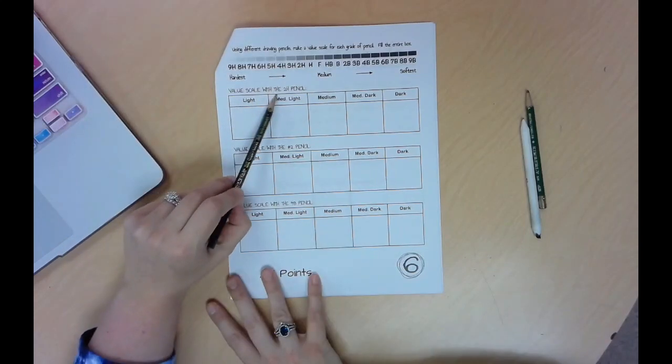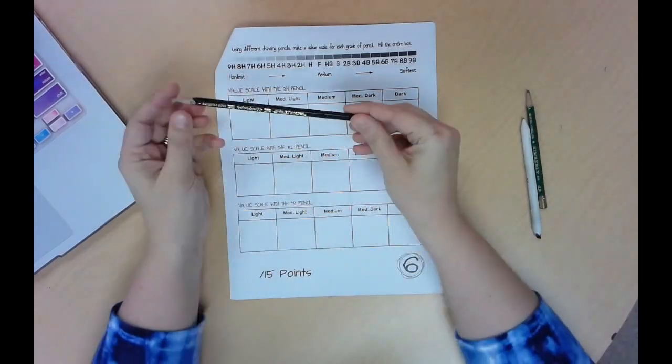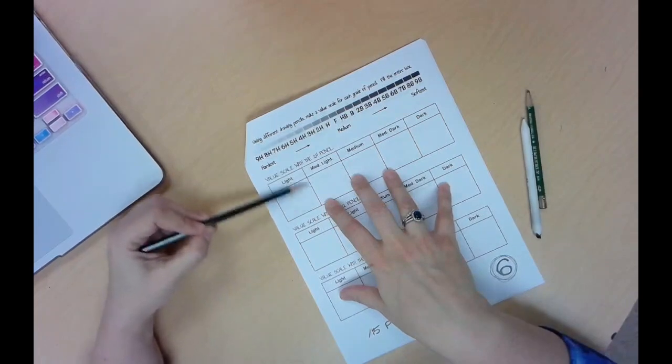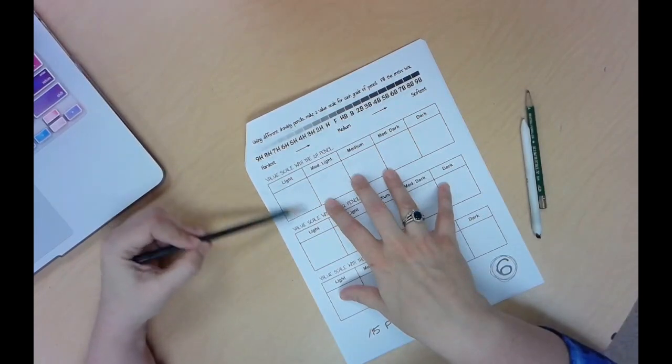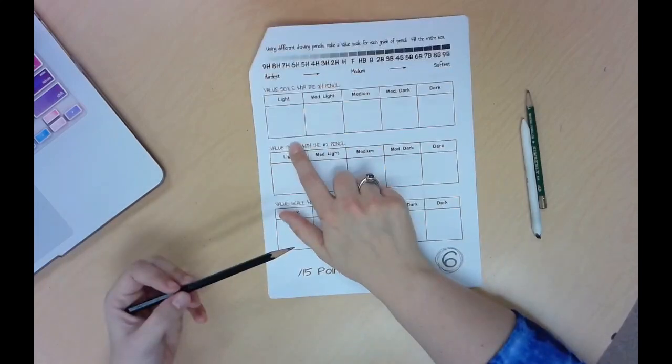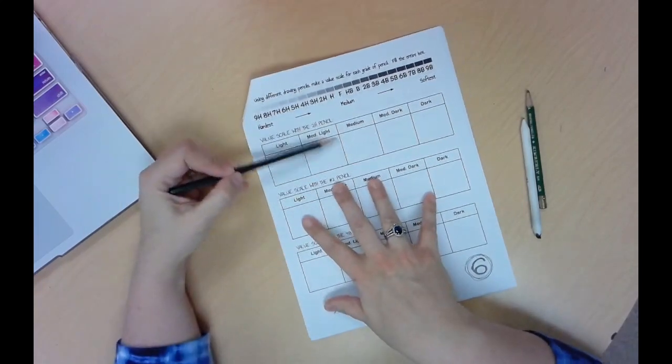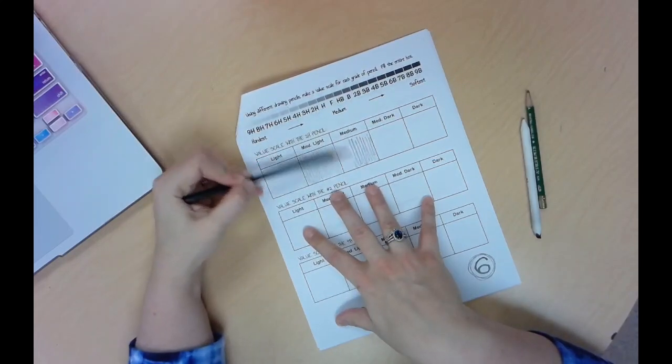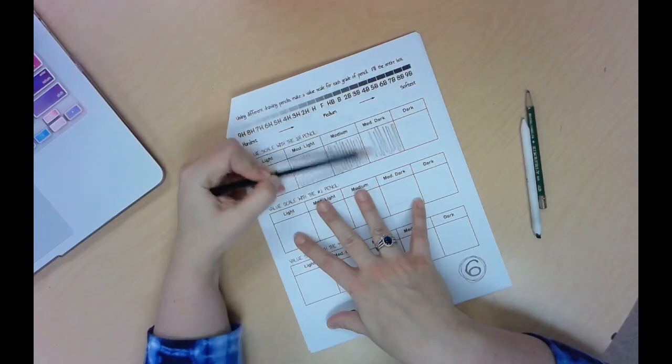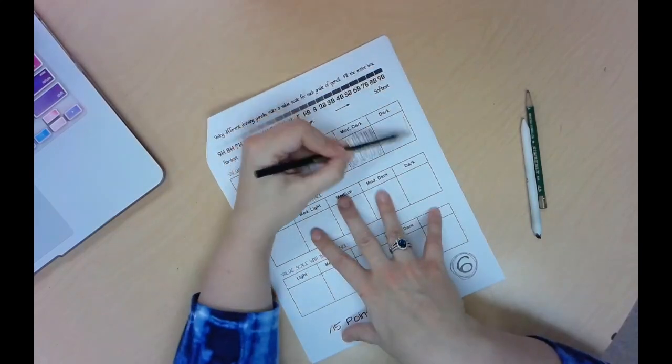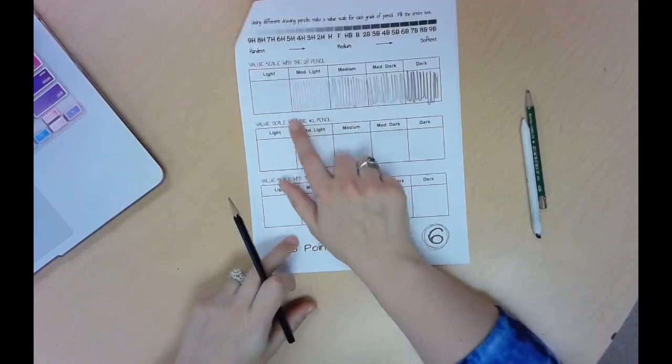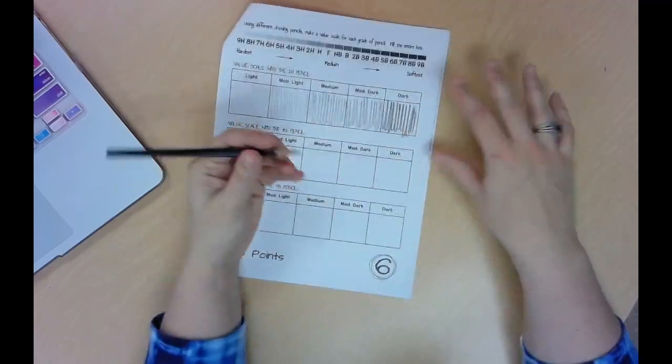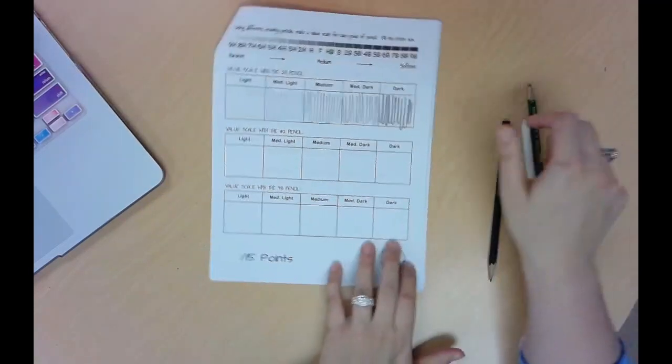So the first one says create a value scale with your 2H pencil. So here's my 2H pencil and I'm going to create a value scale. I'm going to go from light to dark. Now I'm going to do this really quickly because I'm doing this for the sake of the video. When you do it I expect you to color nicely, so you're just going to go darker and darker in each box. And eventually in the last box you're going to go really dark. If I can't tell the difference between one box to the other you haven't done it right. Now that is a bad example of how nice it should look. I'm going to show you a better example in just a little bit.